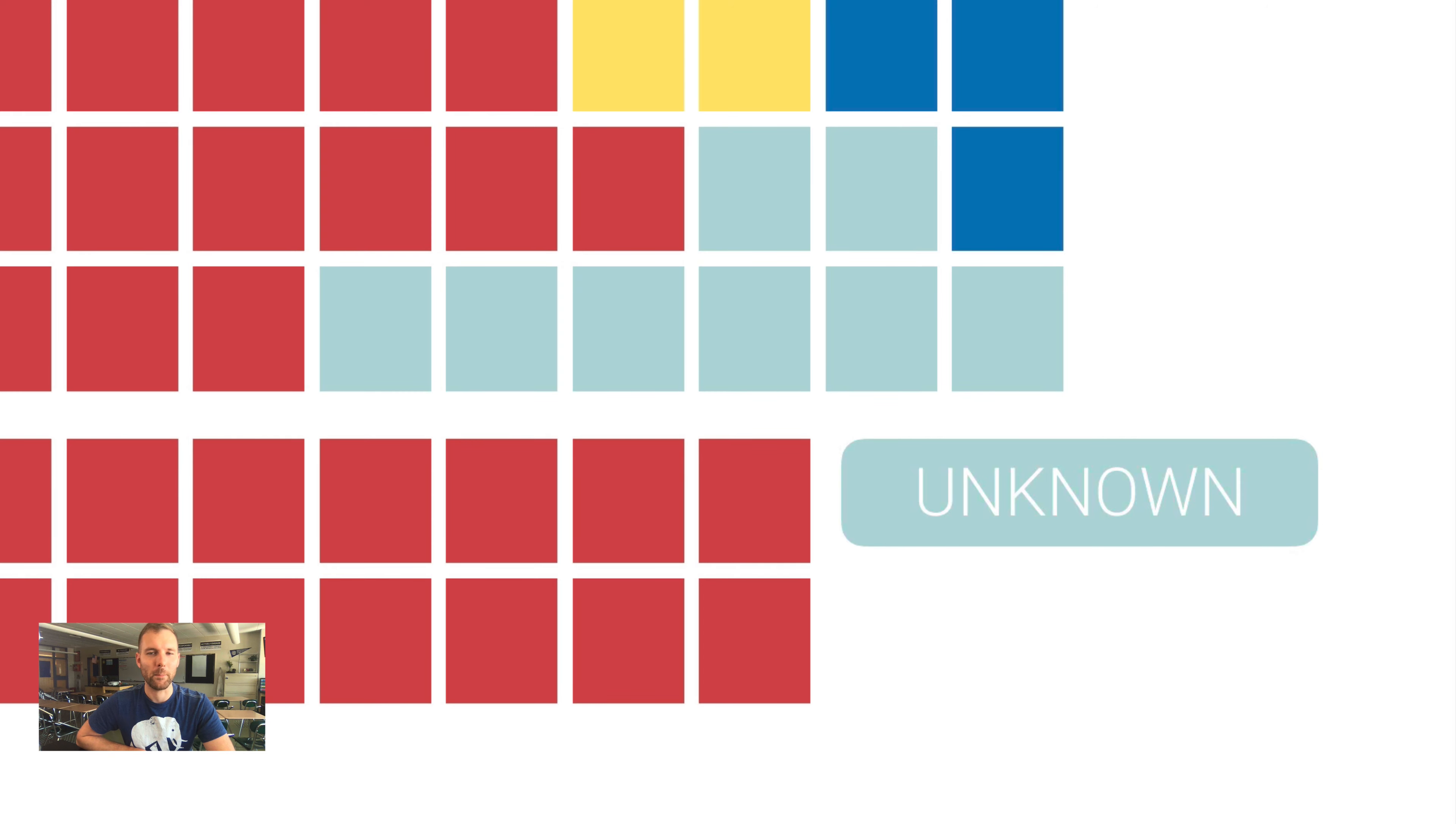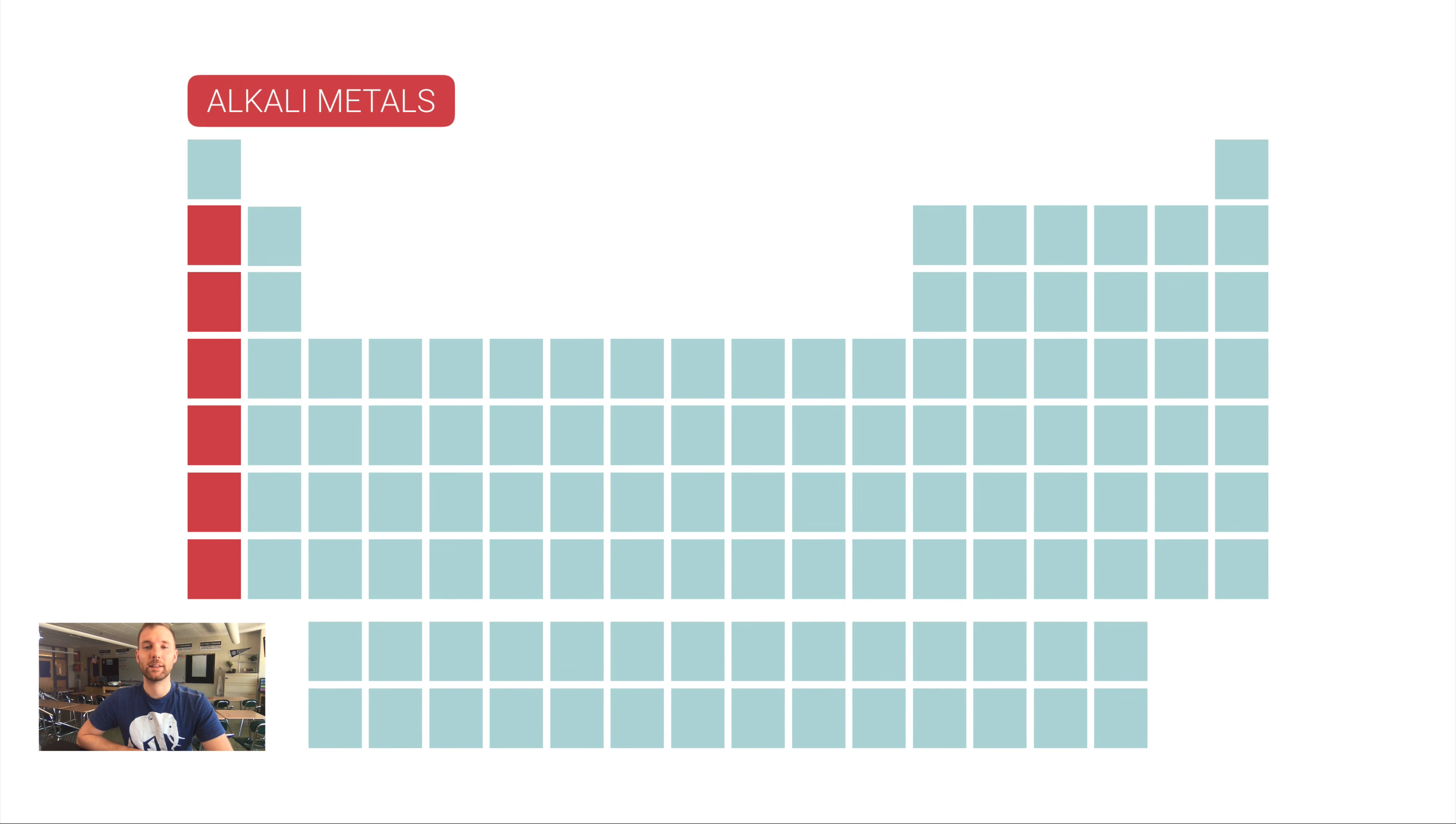Now there are some regions of the periodic table that are so common in everyday items and certainly useful in chemistry to know. These have names to them. With the exception of hydrogen, that very top element there, all of the group one elements are what we call alkali metals. All of the group two elements, every single one of them, is called an alkaline earth metal.